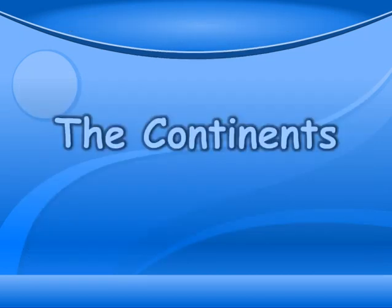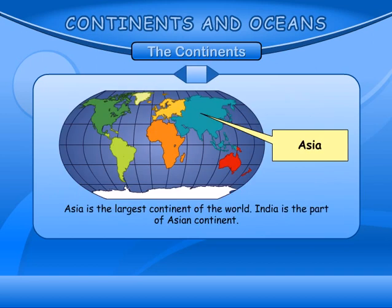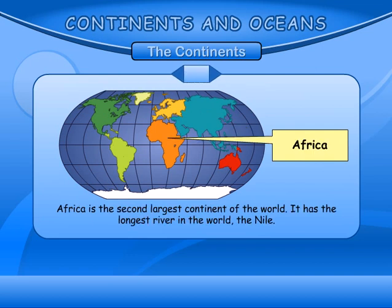The Continents. A continent is a large continuous area of land on the earth. Asia is the largest continent of the world. India is a part of the Asian continent. Africa is the second largest continent of the world.